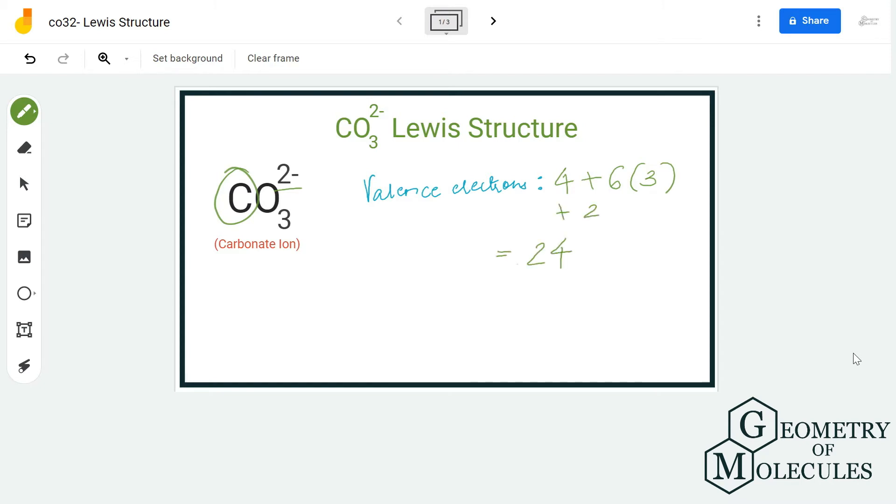For this molecule, carbon will take the central position because it is less electronegative than the oxygen atoms, and all the oxygen atoms will be arranged around it. Now place a pair of valence electrons between each oxygen and carbon atom to show a bond. After you have done that, try and complete the octets for oxygen atoms and check if you have used all 24 valence electrons.